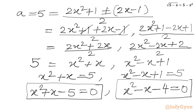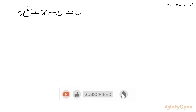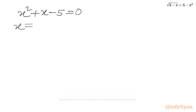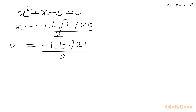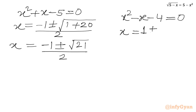Let us solve both equations one by one. For x² plus x minus 5 equals 0, using the quadratic formula: x equals (minus 1 plus or minus square root of 1 plus 20) over 2, which gives x equals (minus 1 plus or minus root 21) over 2. For x² minus x minus 4 equals 0, x equals (1 plus or minus square root of 1 plus 16) over 2, giving x equals (1 plus or minus root 17) over 2.